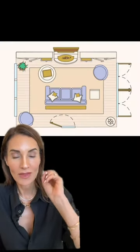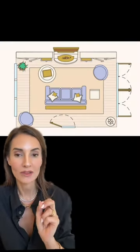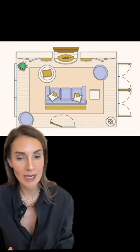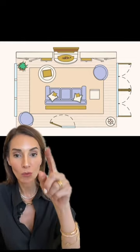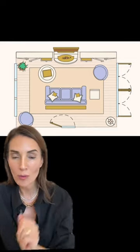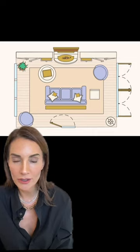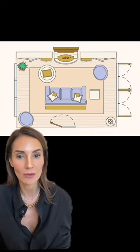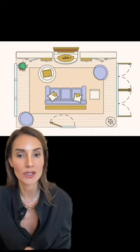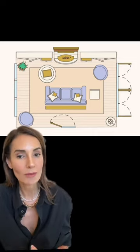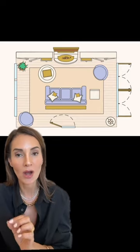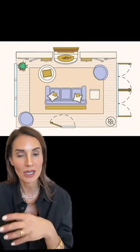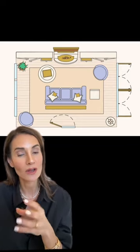Layout number five — this is the perfect layout if you have a small apartment. Nine times out of ten, most apartments are small. What do you do? Well, you open the door right into your sofa. Believe it or not, this is one of the best ways to do it where it looks great. You open your door, you've got your console table, you've got your sofa.